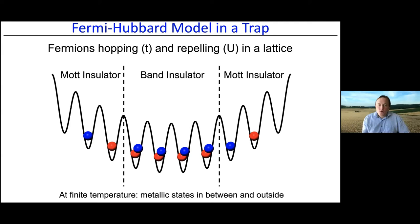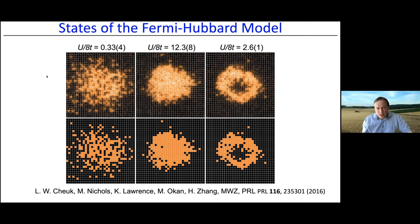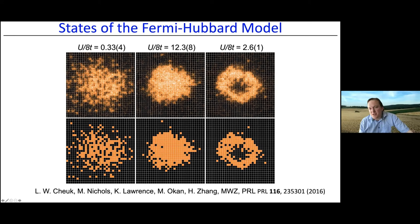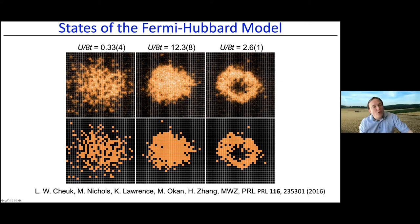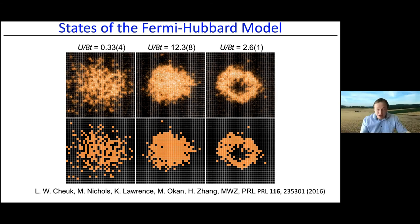These phases can be directly visualized: correlated metals with holes, clean Mott insulators of one atom per site, and a central band-insulating region. In early experiments, the band-insulating region appeared as holes in the image because light-assisted collisions cause doubly-occupied sites (doublons) to immediately form molecules and fly away when illuminated — a persistent problem in nearly all quantum gas microscopes until recently.